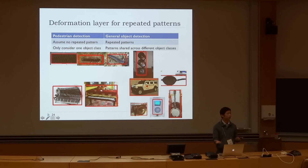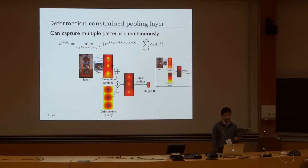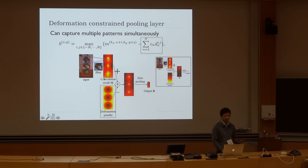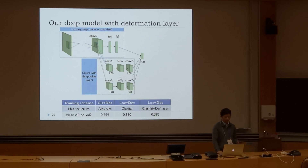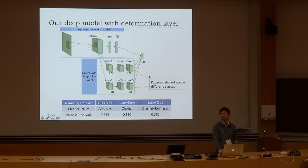We design our def-pooling layer with the details provided in the table. This is the deformation term that will be learned. By adding the deformation constraint and convolving with the response map from your visual pattern, you add them together to obtain the added response, and then perform max-pooling. Therefore, the pooling layer is a kind of max-pooling layer that can learn the deformation constraint of your visual pattern, and you can learn patterns shared across different models.